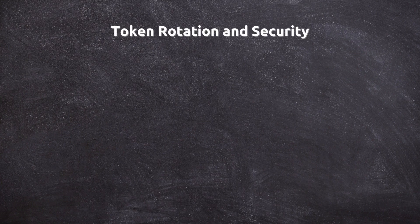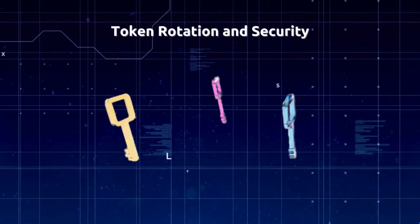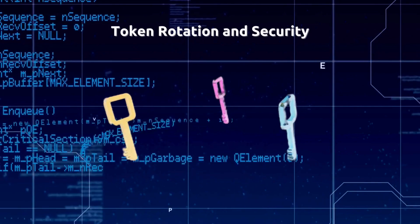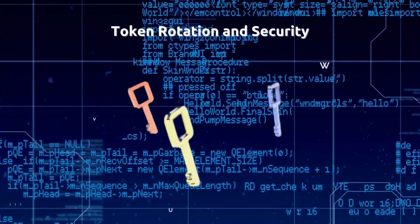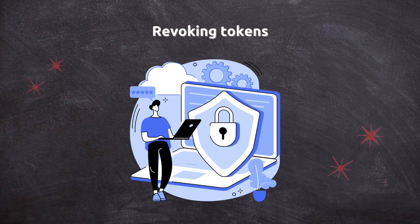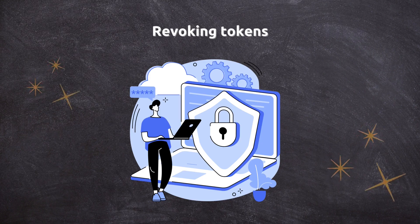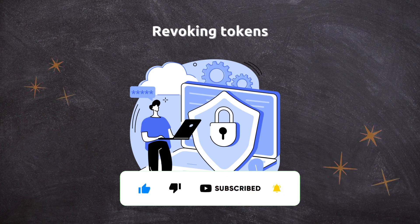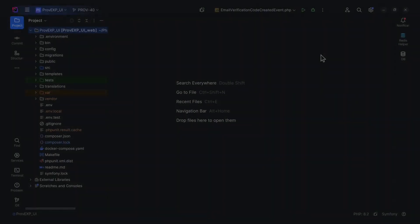Token rotation and security: some systems rotate the token each time a new access token is issued, meaning a new refresh token is generated with each refresh and the old one is invalidated. This prevents reuse of old refresh tokens if they are ever exposed. Revoking tokens: the server can revoke refresh tokens if necessary — for example, if a user logs out or if there is suspicious activity. Once a refresh token is revoked, it can no longer be used to obtain new access tokens, effectively logging the user out.